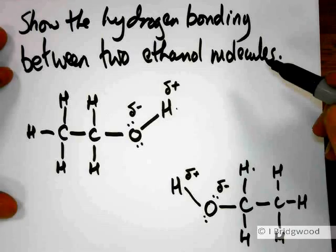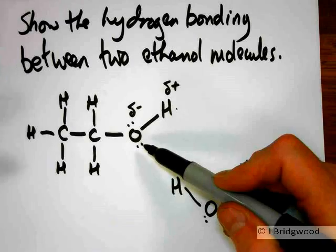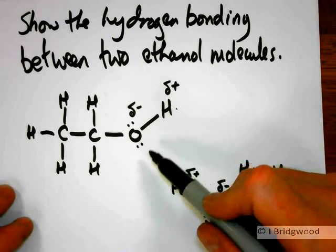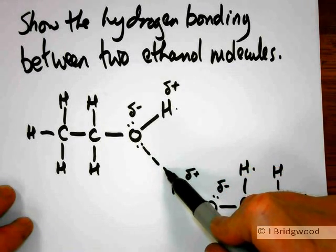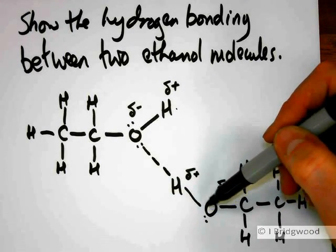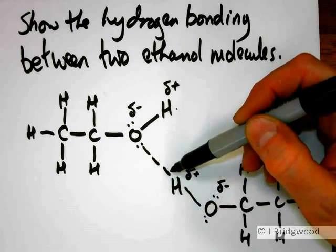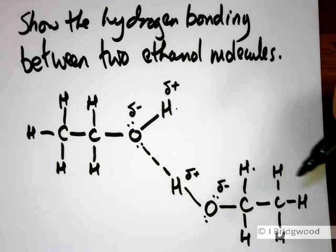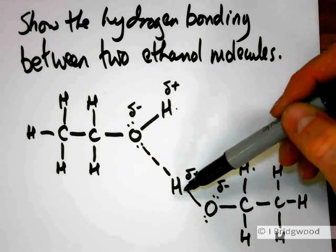So our hydrogen bond is going to be between the oxygen with a lone pair of electrons and the hydrogen of another molecule. The hydrogen bond goes through the lone pair of electrons towards the hydrogen. The oxygen-hydrogen covalent bond is in line with the hydrogen bond — notice it makes a straight line, unlike a dipole-dipole interaction. So there we are showing the hydrogen bonding between two ethanol molecules.